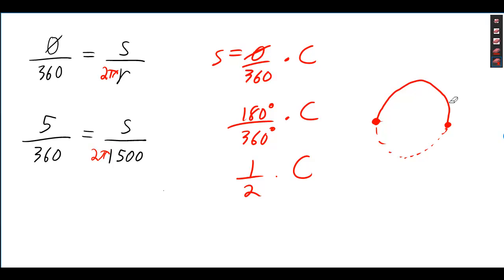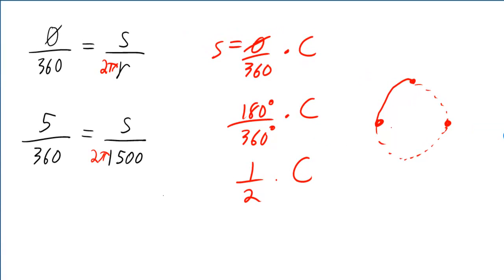Also, if you had a 90 degree angle, then you only get one-fourth. And if you put in 90 degrees here, then this would cancel down to one-fourth.